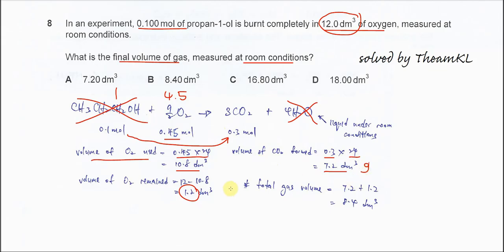So the total gas volumes that remain will be the oxygens and the CO2. So it's 1.2 dm³ plus 7.2 dm³. We get 8.4 dm³. So answer is B.